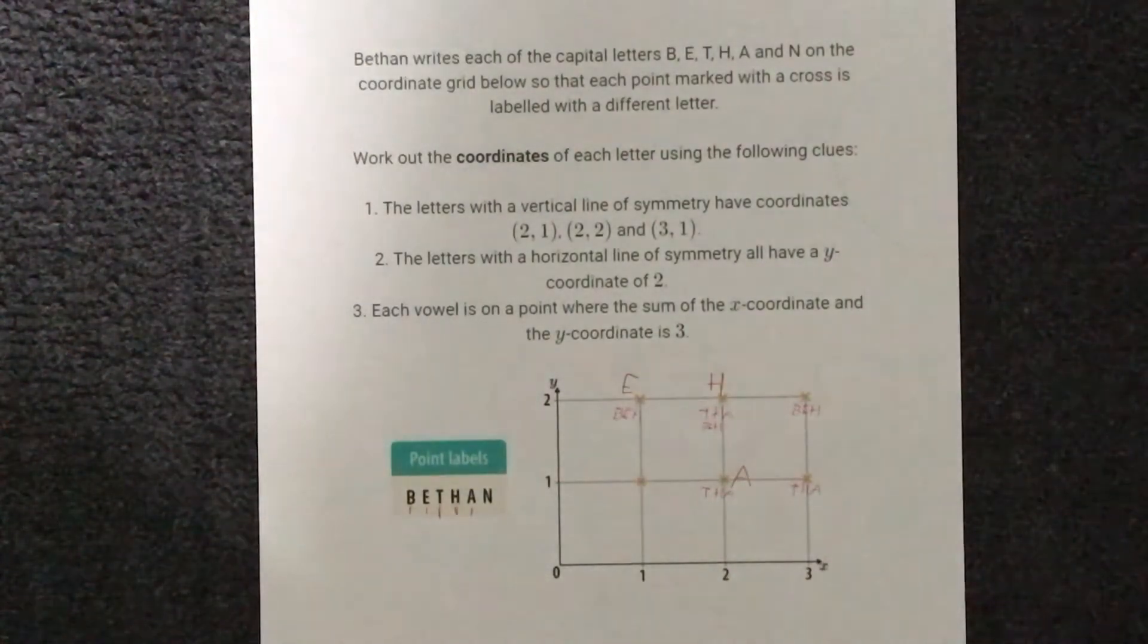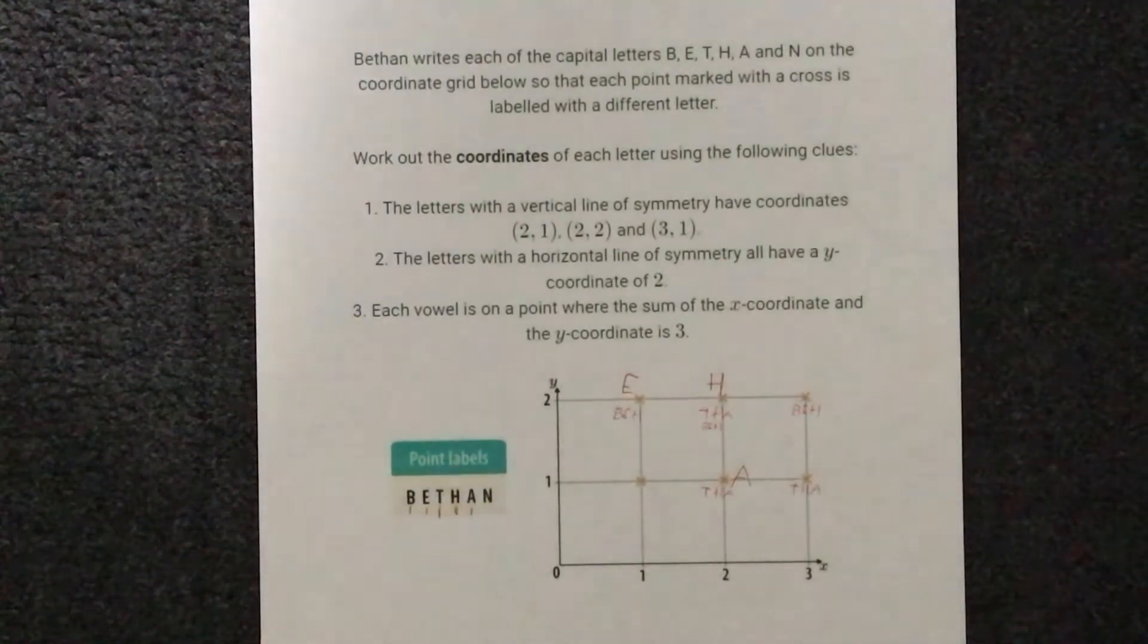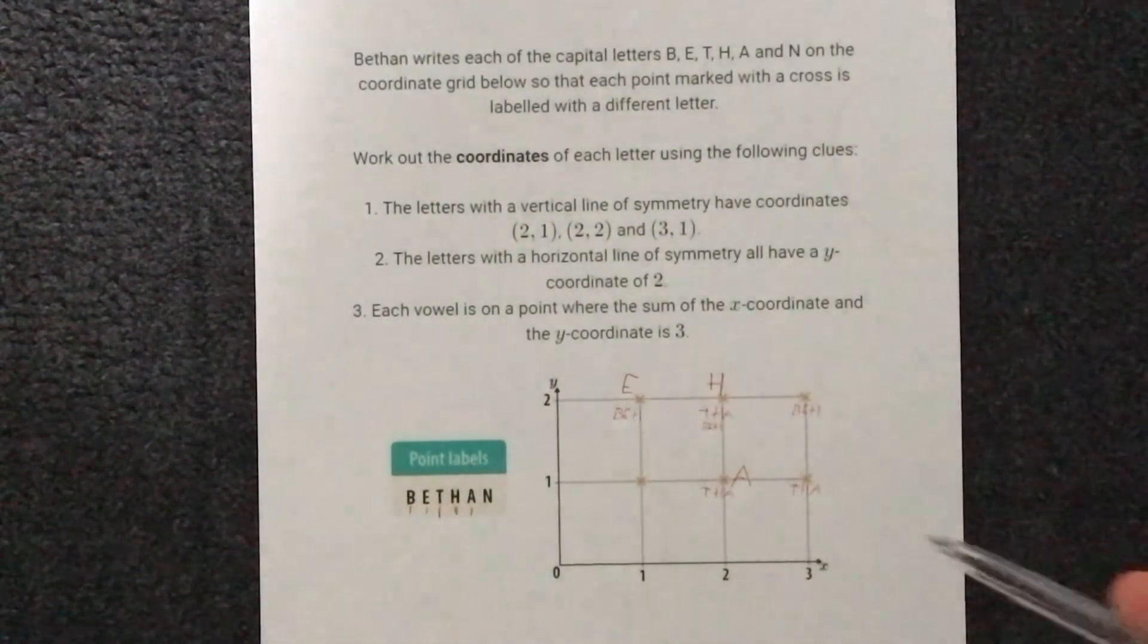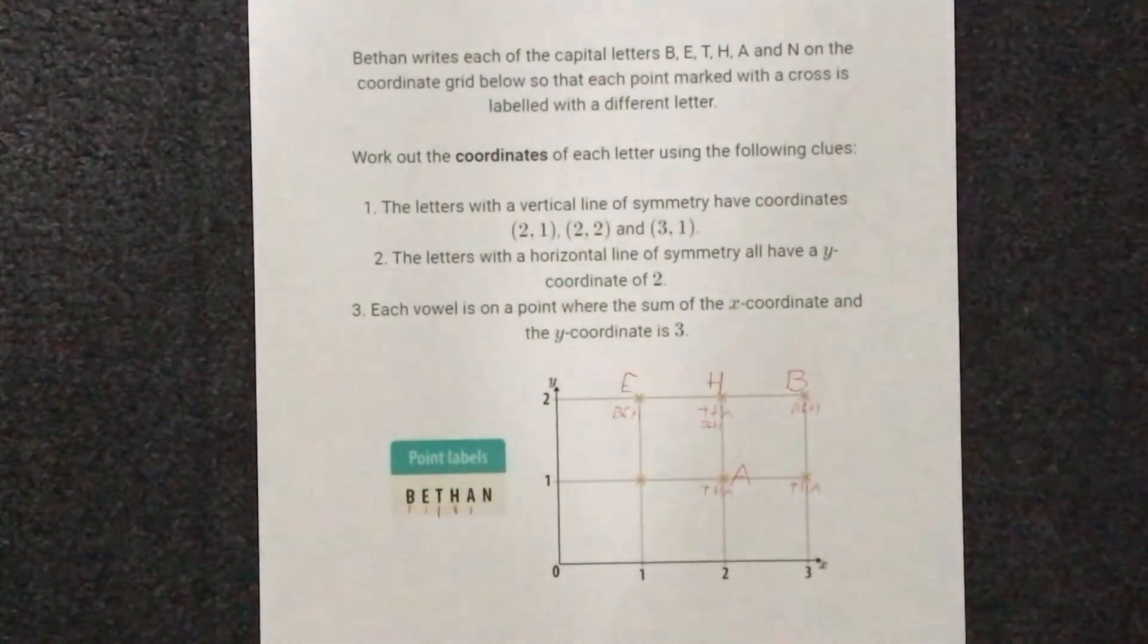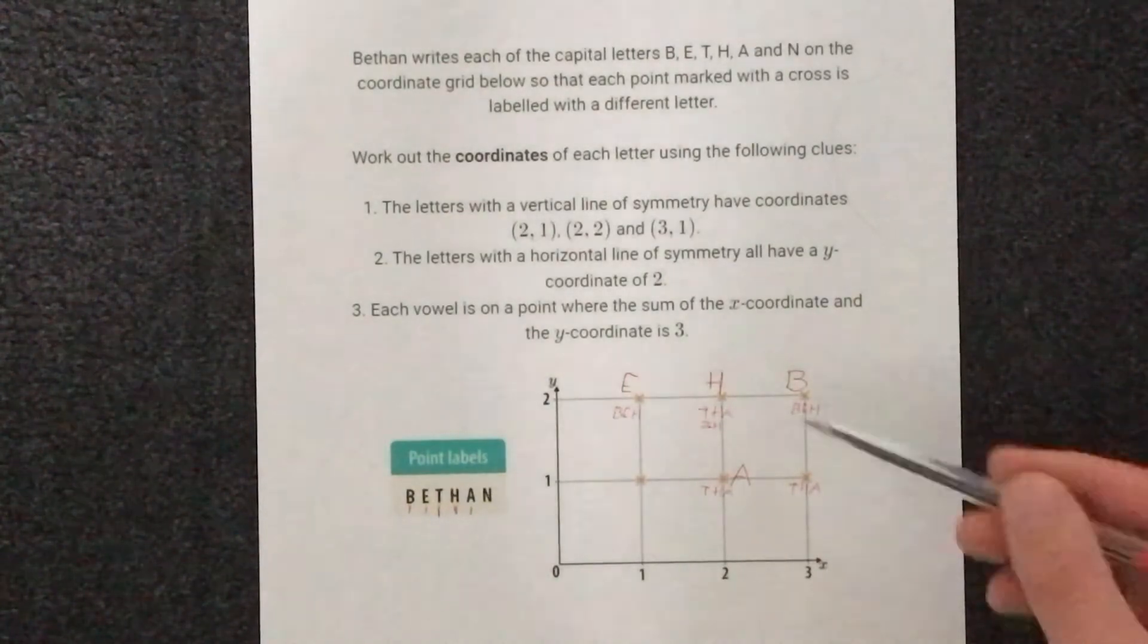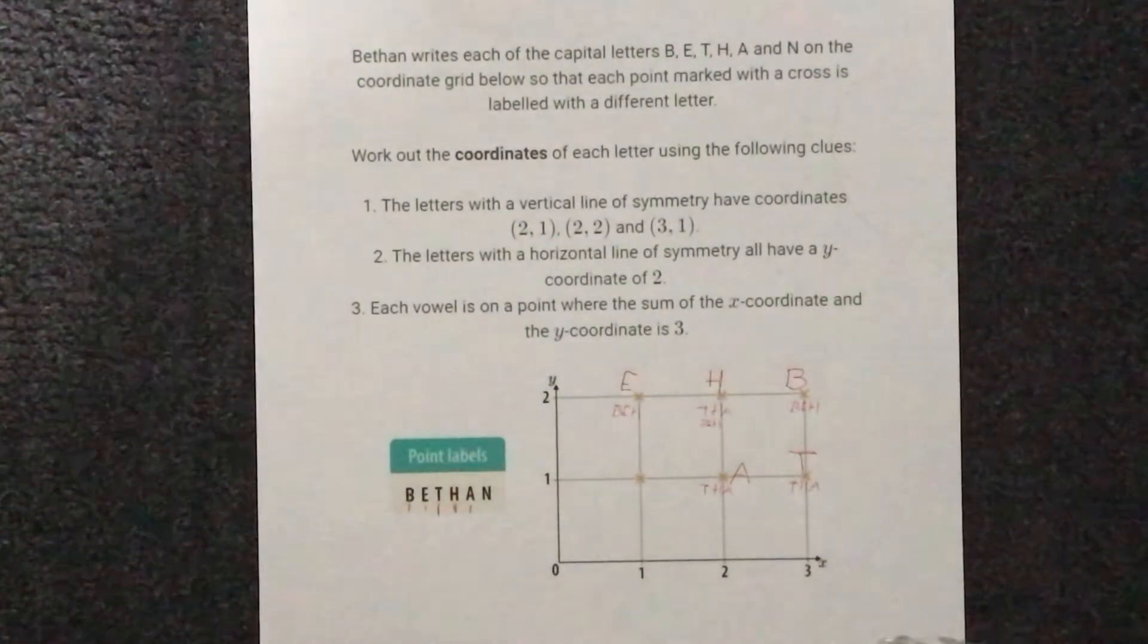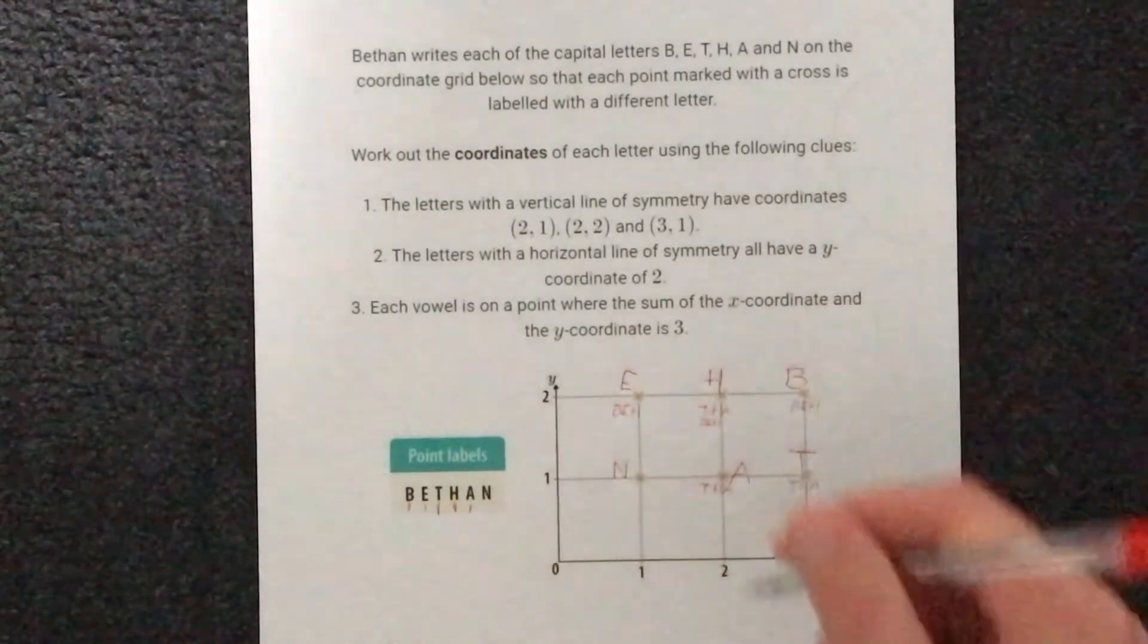So let's go back to these two points here, this (3,1) and this (3,2). Well we said (3,2) could be B, E or H. But we've already used E and H, so it must be B. And then if we look at (3,1), where we said it could be T, H or A, we've already used H and A, so it must be T. And then the only letter we've got left that hasn't been put on a point yet is N. So N must go on this (1,1).